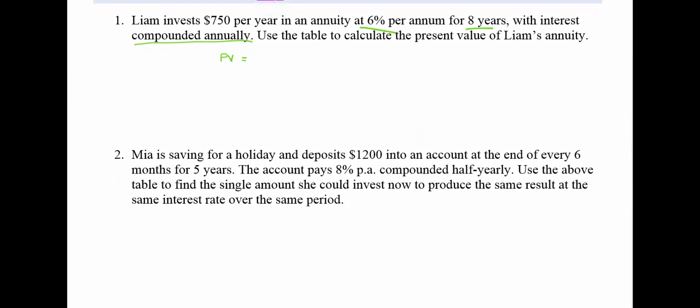So the present value, which is how much money I need to invest now, which is going to give me the same amount of money as putting in these regular contributions, is the amount that $1 grows to times that by $750 because they're my contributions. And if I do that, I get an answer of $4,657 exactly.